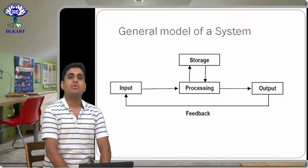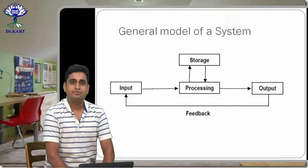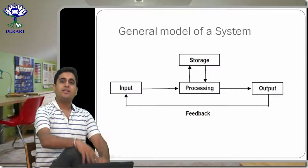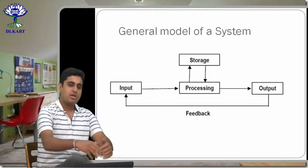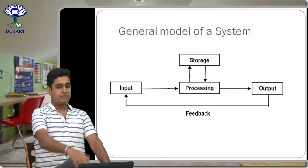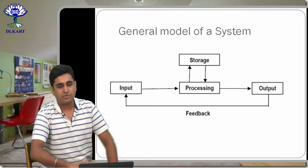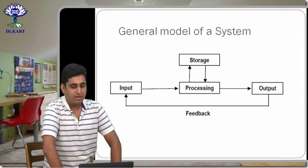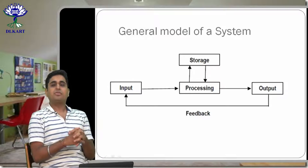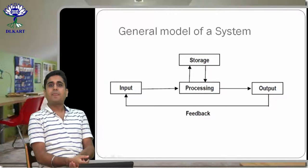When we look at a computer system, it is divided into several different components. These components are there in front of you on the screen. You can see there is an input unit, an output unit, a processing unit, and a storage unit. So your entire computer system is divided amongst four different units.